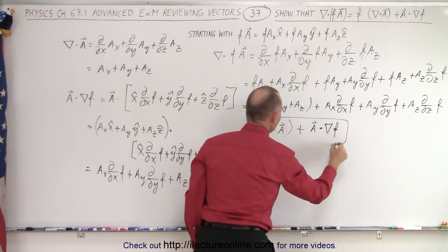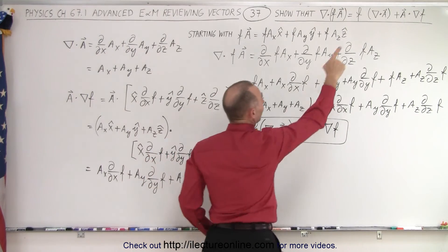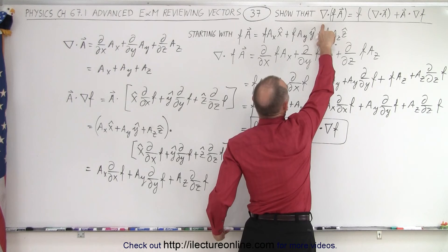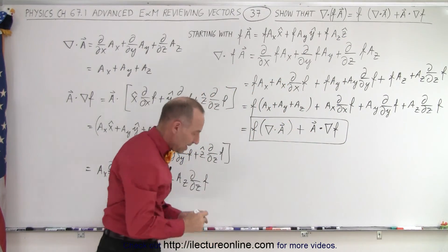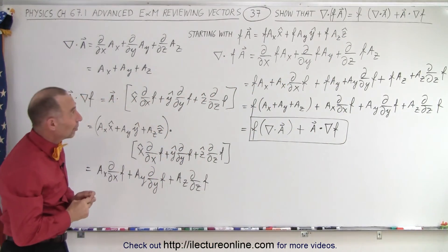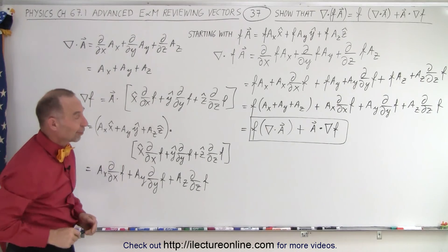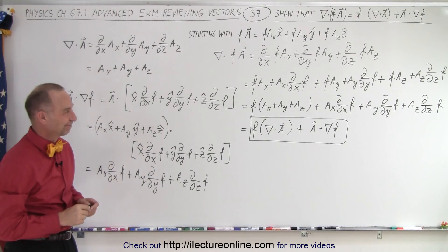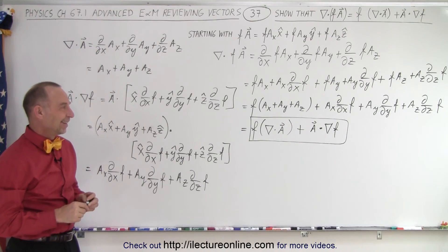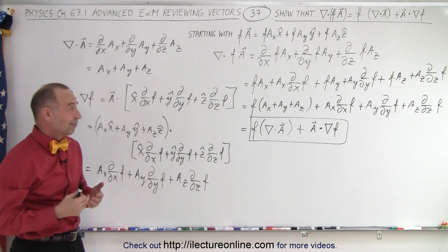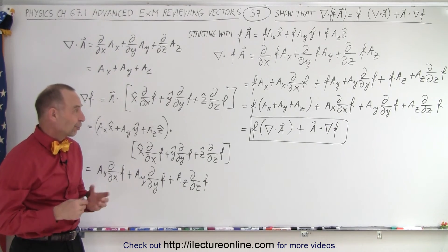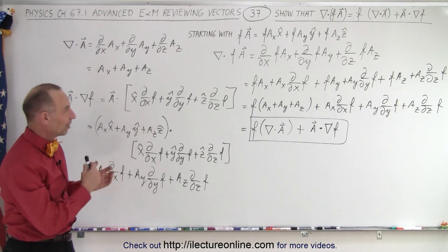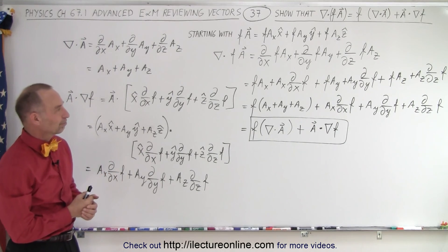We end up with the exact quantity on the right side, which is therefore equal to what we started with — the divergence of f times vector A. That is how we can show that the left side equals the right side. It's mostly algebra, plus knowing the definitions of divergence and gradient and how to use the product rule.